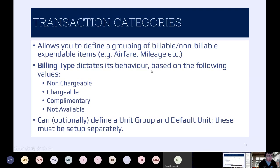Next we need to give consideration to transaction categories. Potentially as part of a project, our resources may need to go out on site, and we want to factor in the ability to charge mileage, maybe overnight hotel costs, meals, and things like that. Transaction categories give us the framework to start thinking about this. Our key consideration when setting these up is the billing type values — these will ultimately dictate whether recorded expenses matching these categories get factored into your various figures. You've got four options: non-chargeable, chargeable, complimentary, or not available.